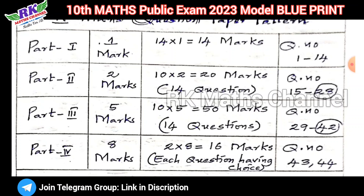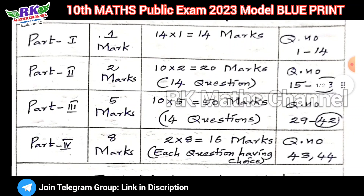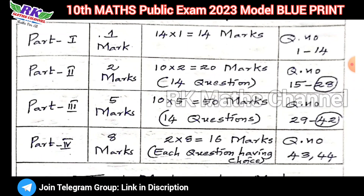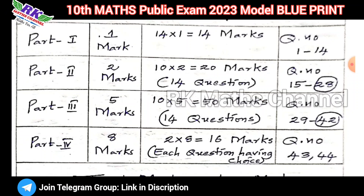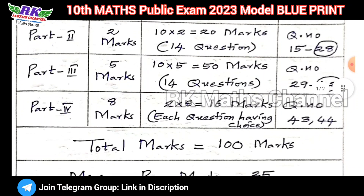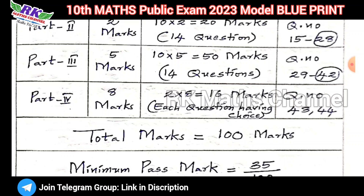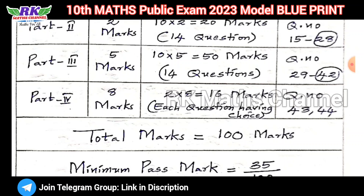Part 3 is 5 marks each, with 14 questions, and 10 questions are answered for 5 marks. Question numbers 29 to 42, and question 42 is compulsory. Part 4 is 8 marks. Question numbers 43 and 44. So, total is 100 marks.